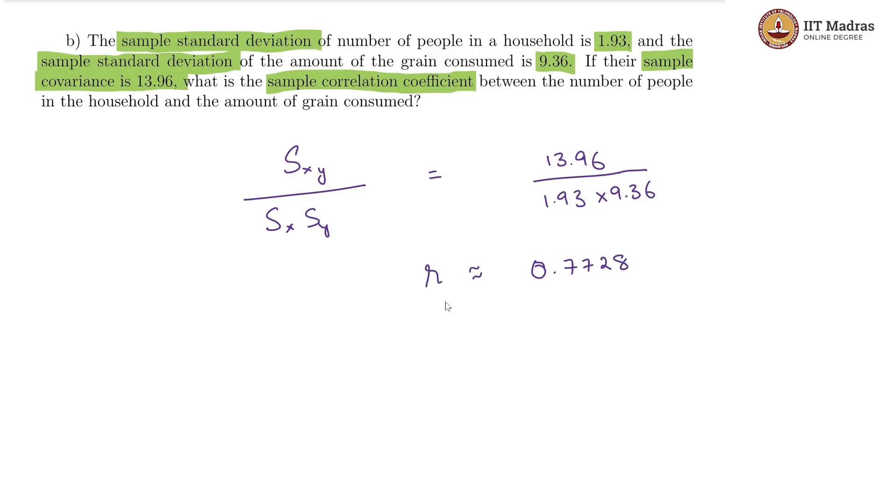So our sample correlation coefficient is roughly 0.7728 which is greater than 0.5 and it is positive. So our earlier deduction that it is a strong and positive association is confirmed here because we are getting a fairly strong sample correlation coefficient.